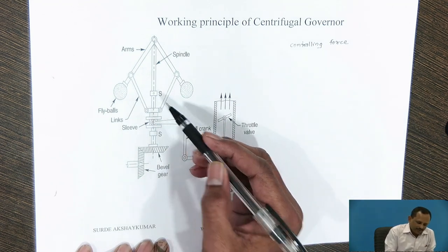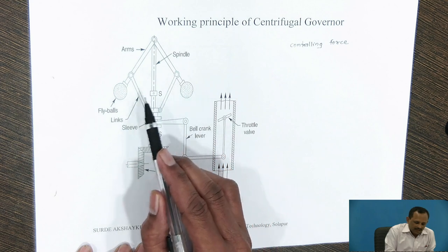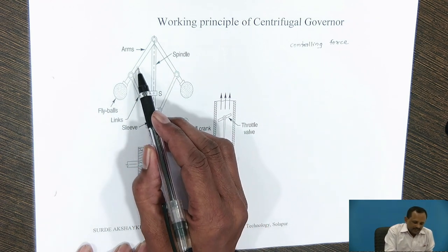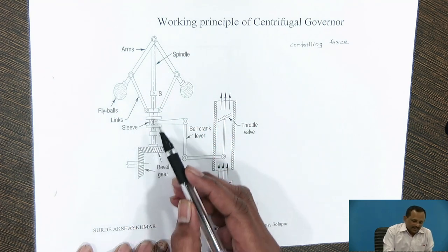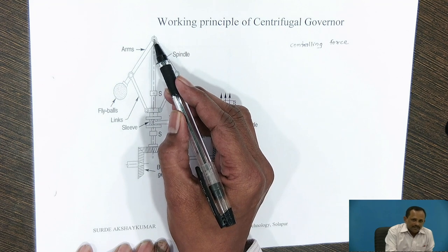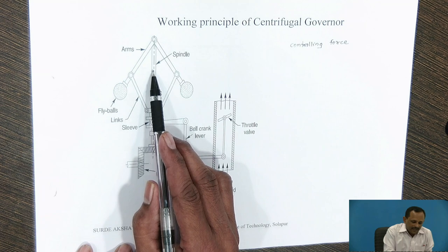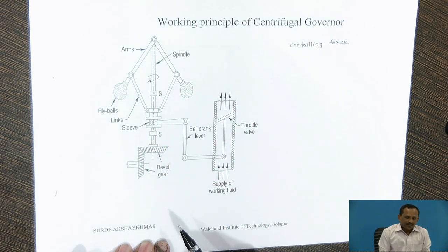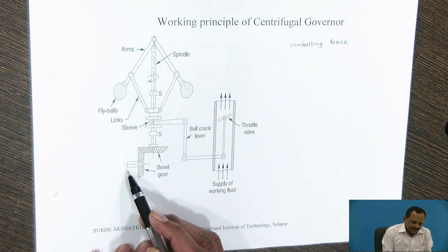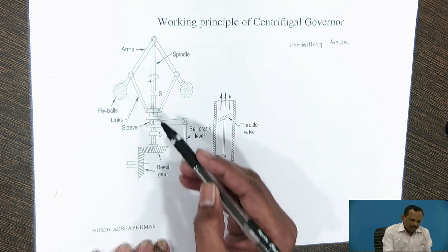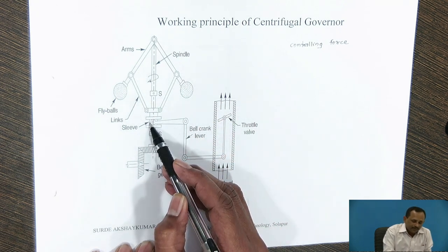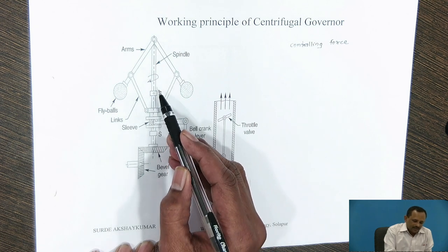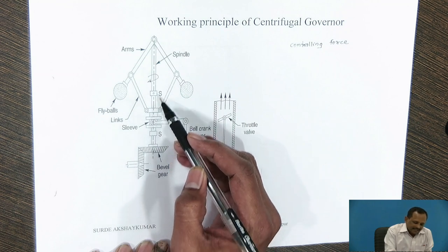The centrifugal governor consists of two balls of the same mass, known as fly balls or governor balls. These two balls are attached to the arms of the governor, and the arms of the governor are rotated on the axis of the spindle, so that when the spindle rotates, the arm and ball will also rotate about the vertical axis of the spindle. The spindle of the governor is driven by the engine through the bevel gear. The arms are connected to the sleeve by the links. This sleeve also rotates about the spindle as well as it slides along the spindle.